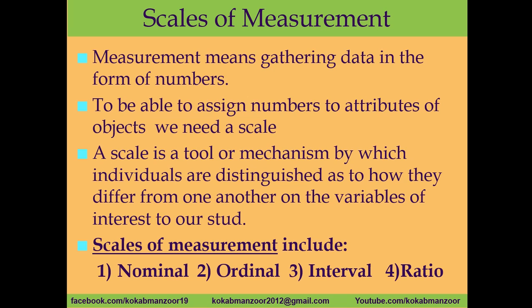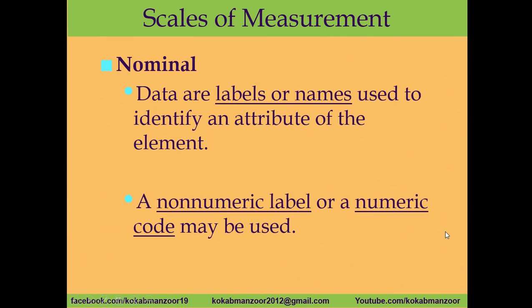What is the nominal scale? Nominal scale means when the data are labels or names used to identify attributes of an element. Sometimes we have data in categorical form — very nominal kind of data where we just have different categories. We normally give a non-numeric label, or sometimes we can give a numeric hypothetical code. For example, how many students in your college are male and female.